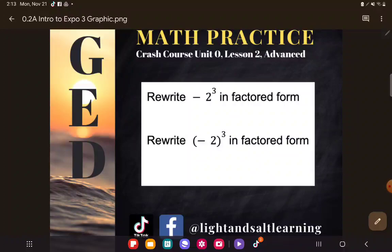It says, rewrite -2³ in factored form. That's the first question. And then the second question, you might read it exactly the same way: rewrite (-2)³ in factored form. In fact, a lot of students would look at this and say it's the exact same thing, Kate.